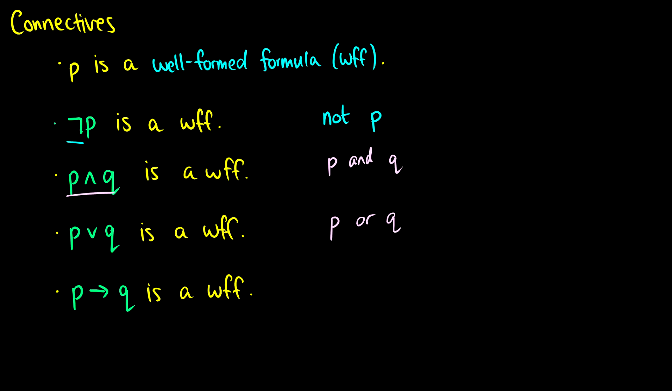And finally, the fifth one, P arrow Q, or rather if P then Q is a woof. So if we have a proposition, we can do not P, we can do P and Q, we can do P or Q, and then we can also do if P then Q.